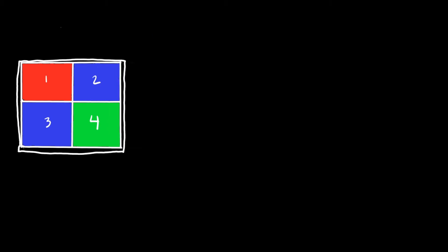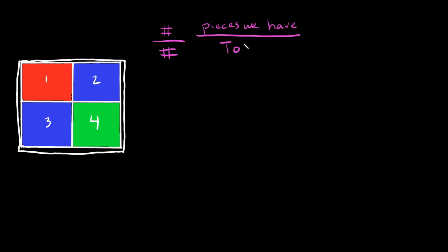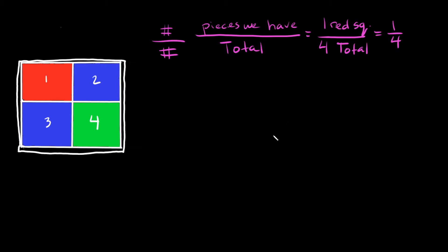Here's the next example. We have one big square divided into four little squares. What fraction of the square is red? The top number is how many pieces we have over total pieces. We have one red square out of four total squares, so that's one over four, or one fourth.